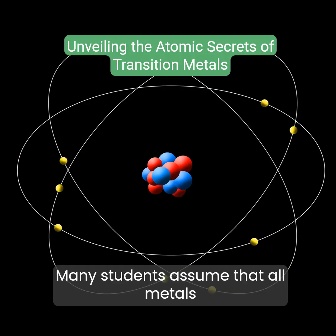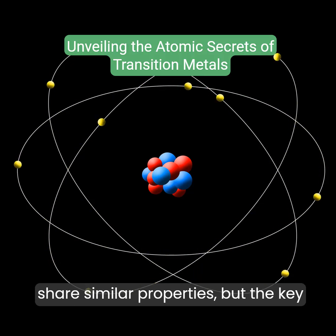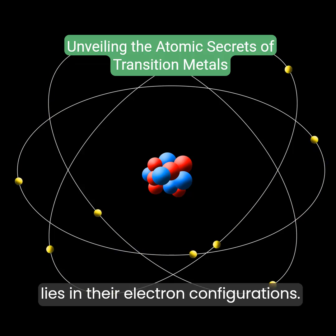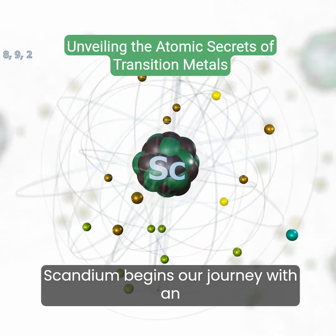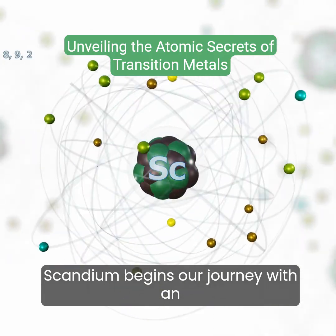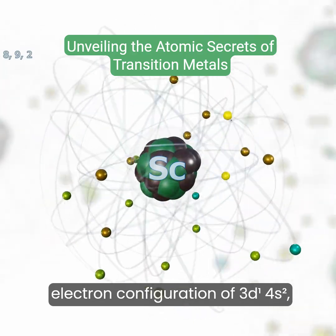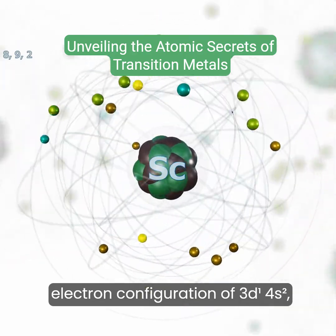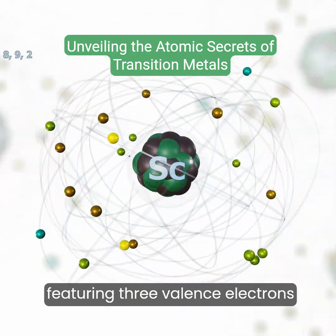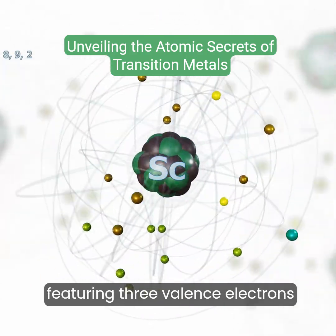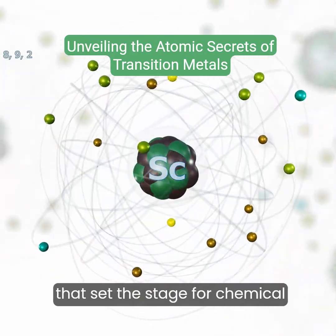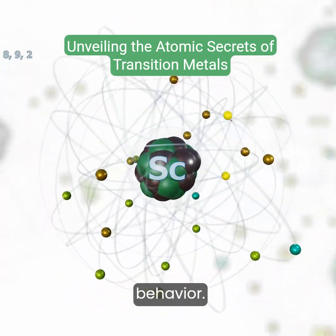Many students assume that all metals share similar properties, but the key lies in their electron configurations. Scandium begins our journey with an electron configuration of 3d¹4s², featuring three valence electrons that set the stage for chemical behavior.